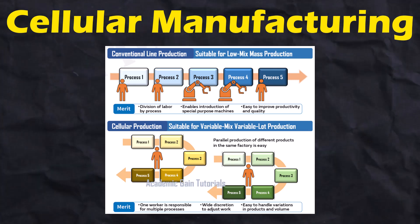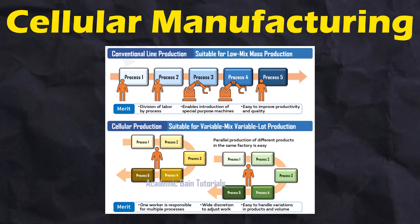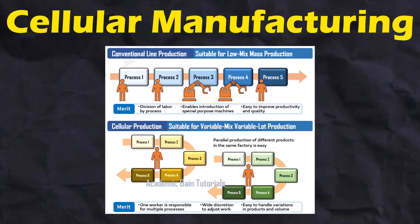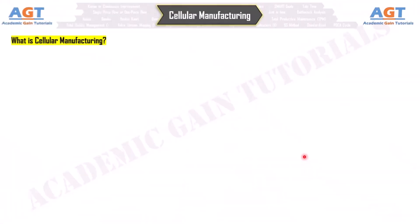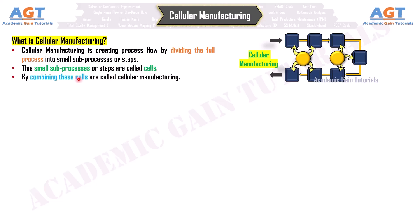Cellular Manufacturing. What is cellular manufacturing? Cellular manufacturing is creating process flow by dividing the full process into small sub-processes or steps. These small sub-processes or steps are called cells. By combining these cells, the system is called cellular manufacturing.